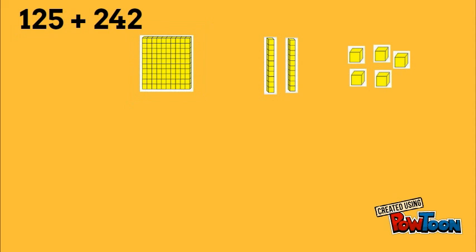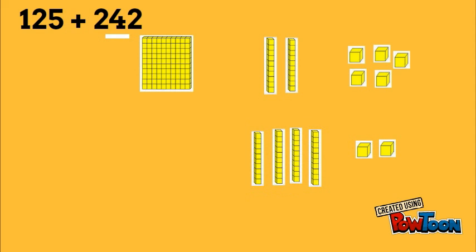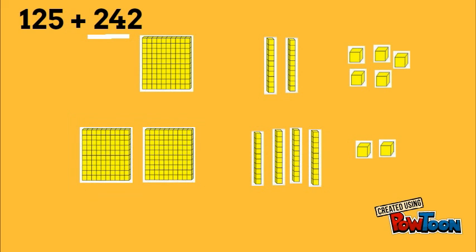Alright, now we'll represent our second number, 242. So we have 2 in the 1's place. We have 4 in the 10's place, so we'll put 4 tens or 4 rods. And we have 2 in the 100's place, so we'll put 2 flats for 200. And there we have 242 now.